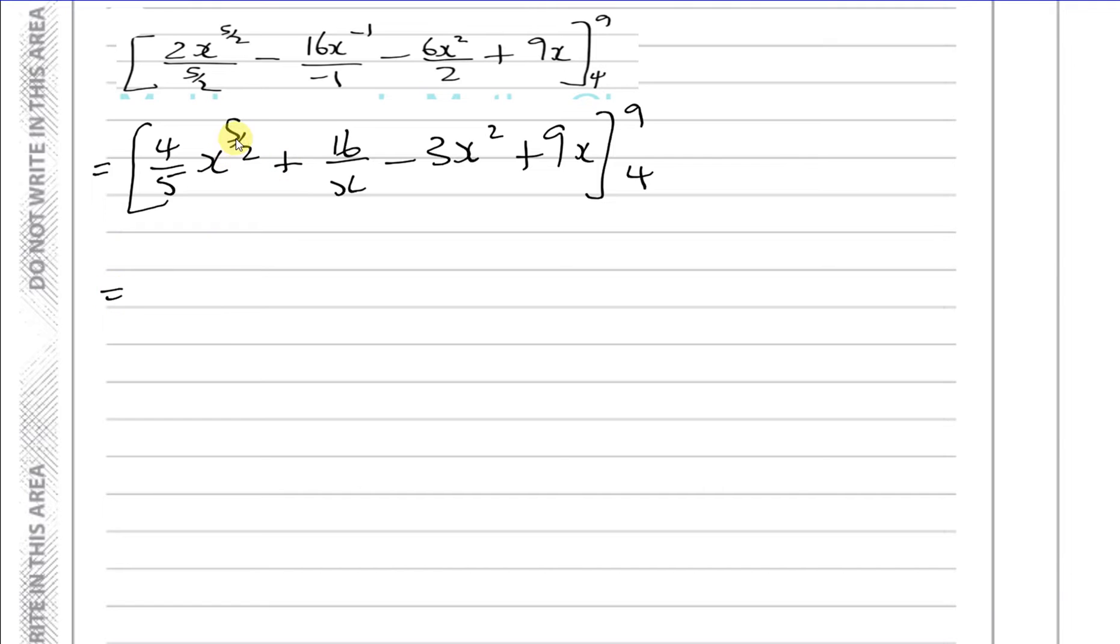And now we're ready to put these values of 9 and 4 into here and evaluate the answer. So this is like the square root of x to the power of 5. So let me just put the values in that way.